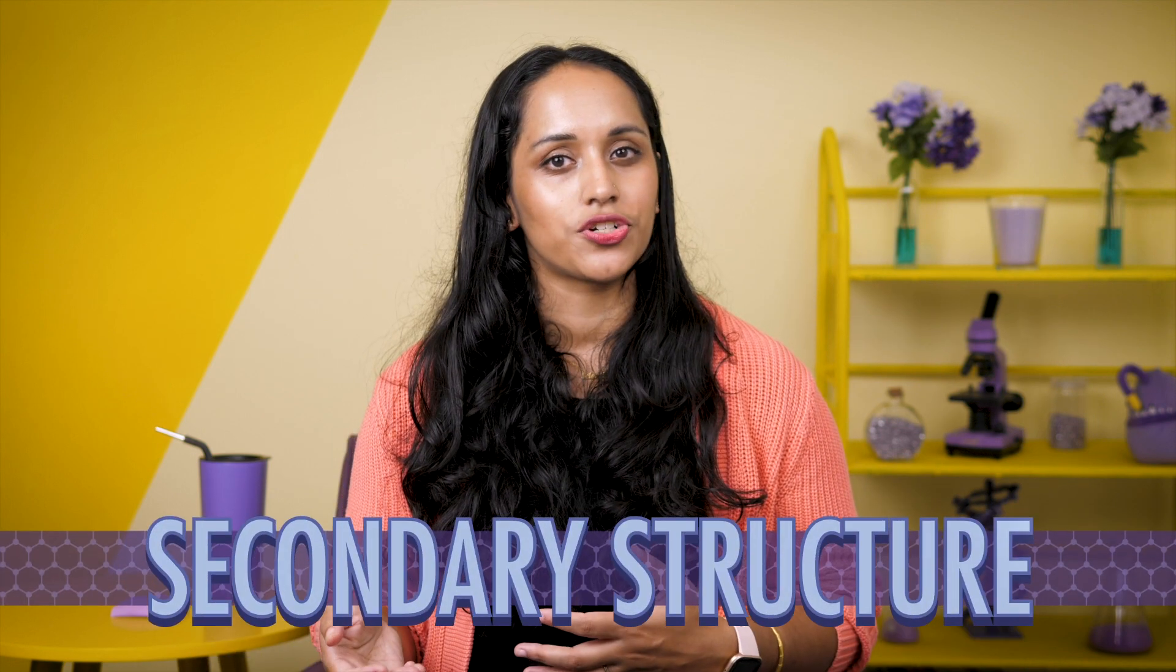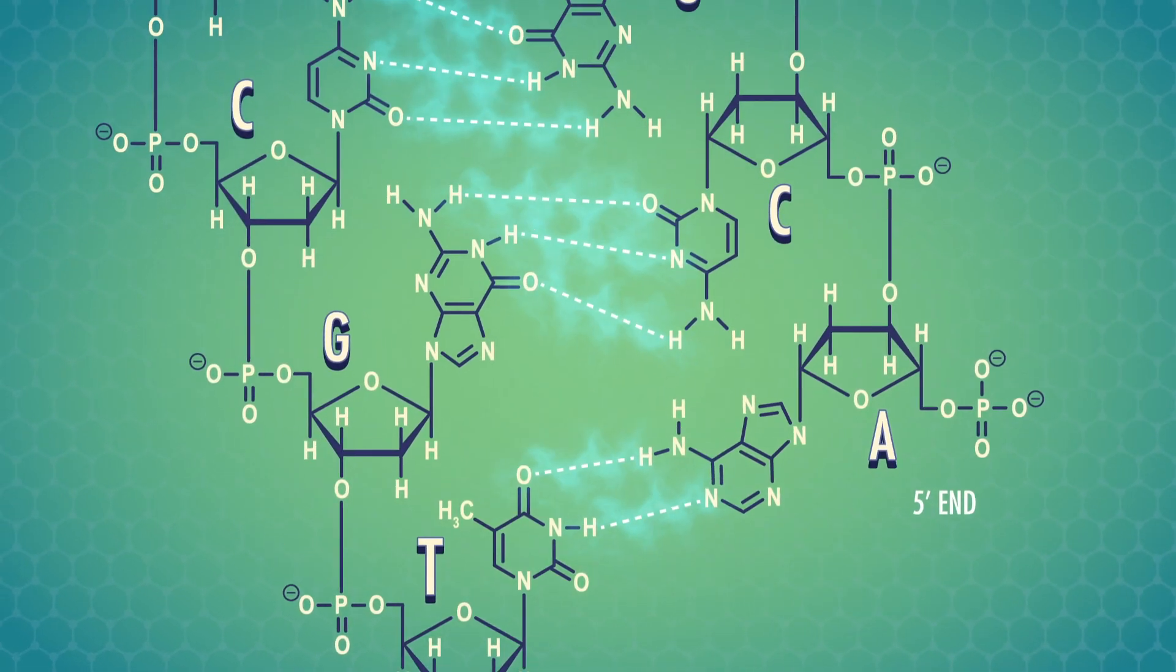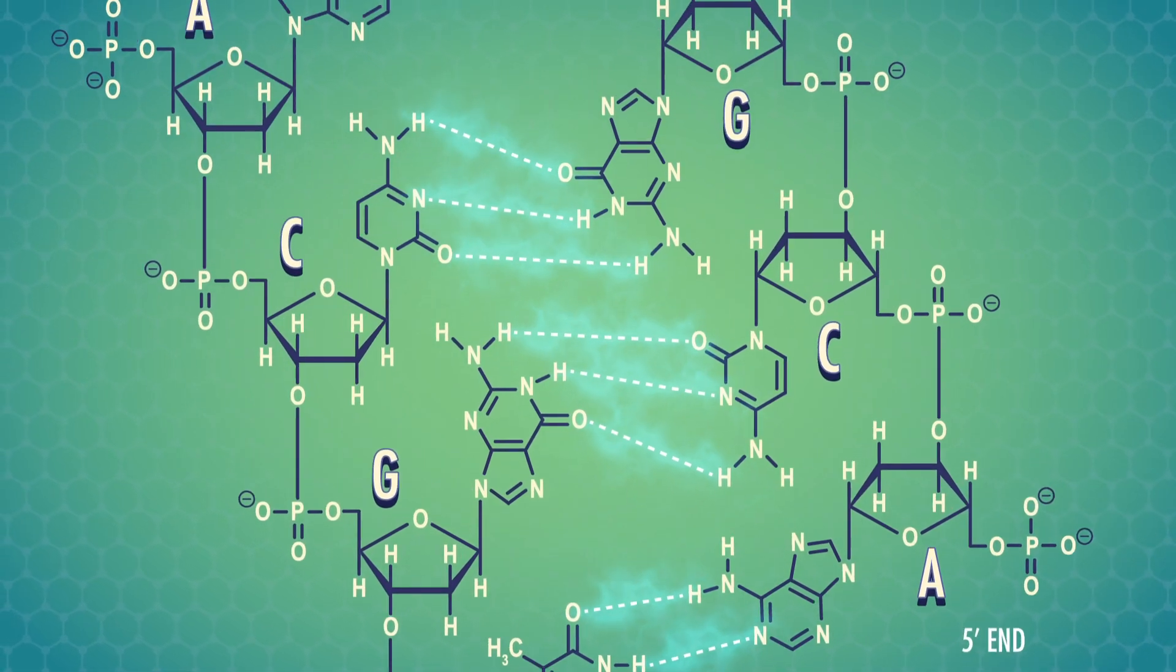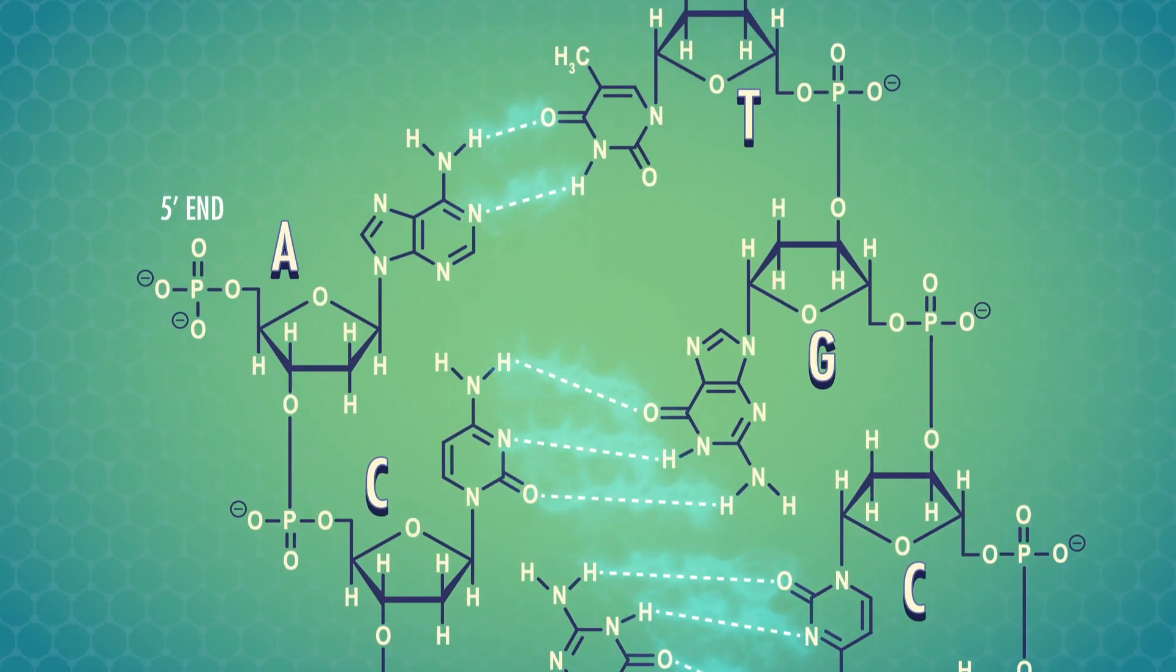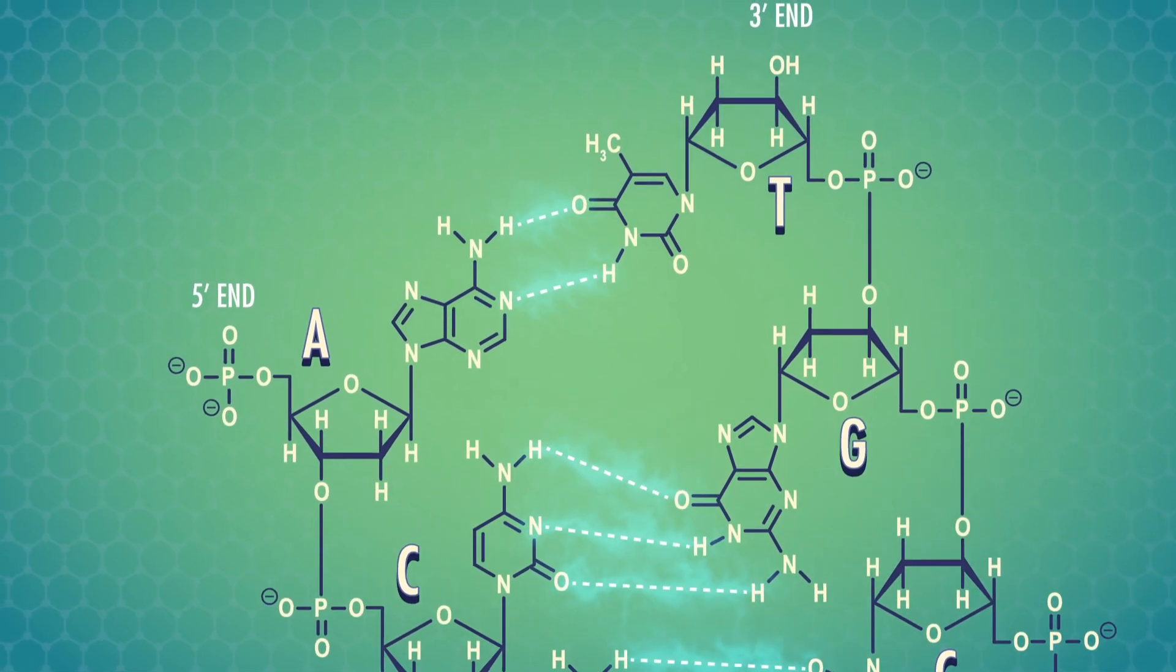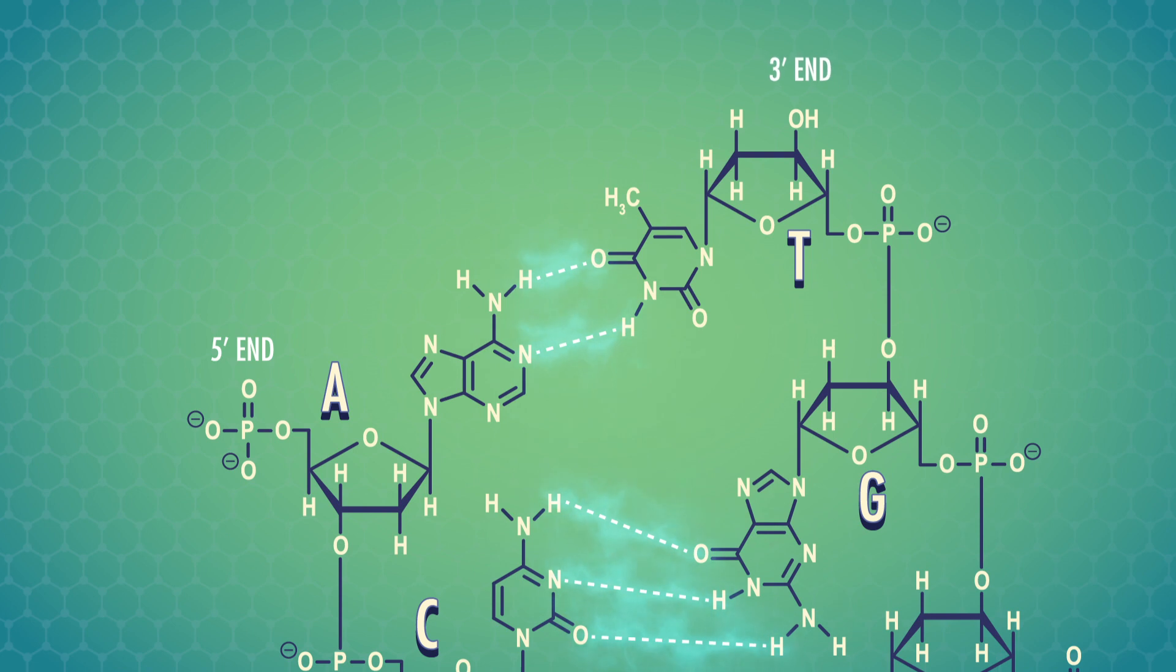But DNA in our cell nuclei isn't single-stranded. In the secondary structure, two DNA strands bond together to form the familiar double helix. Nucleotides can only hydrogen bond in specific pairings. And to form those bonds, the DNA strands have to line up in opposite directions. One has the 3-prime position of the carbohydrate facing up, and runs 3-prime to 5-prime. And the other runs 5-prime to 3-prime.